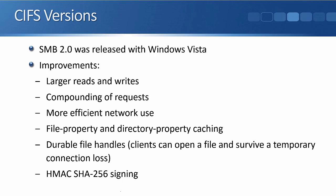SMB 2.0 also has file property and directory property caching, durable file handles meaning clients can open a file and survive a temporary connection loss, and it supports HMAC SHA-256 signing for enhanced security.